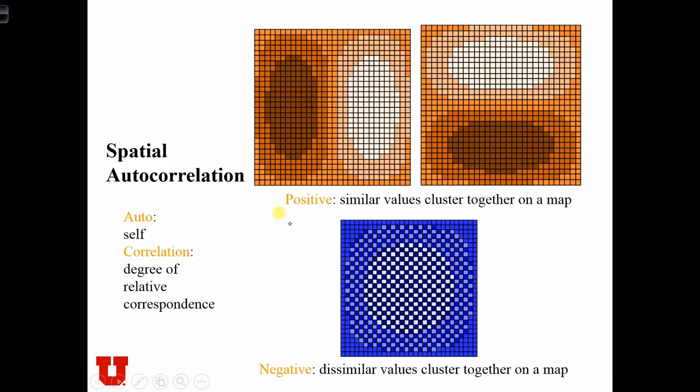In the case of positive autocorrelation, like values cluster together. So if dark values are high numbers and light values are low numbers, we see that the high values cluster together and the low values cluster together.